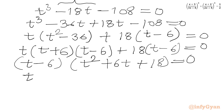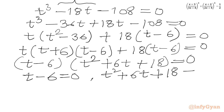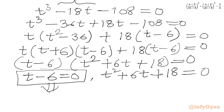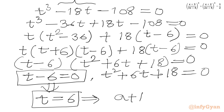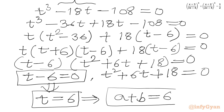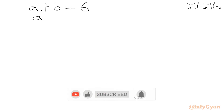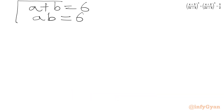From the zero product rule, either t minus 6 equals 0, or t squared plus 6t plus 18 equals 0. From the first factor, t equals 6, and since t was our substitution a plus b, we get a plus b equal to 6. Combined with a times b equal to 6, this is one system we will solve.